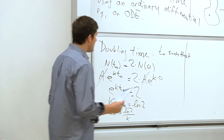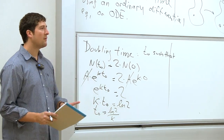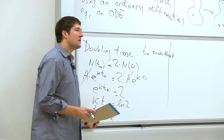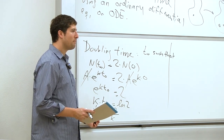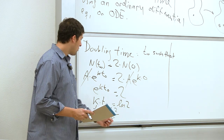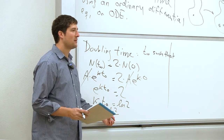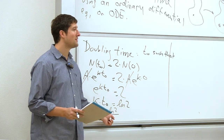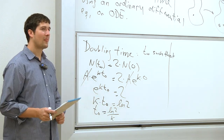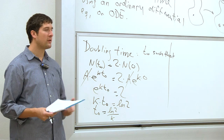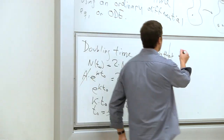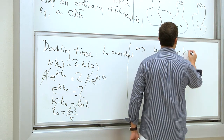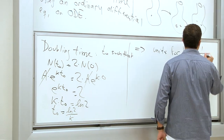Back to modeling. T0 has units of time — minutes, hours, whatever. So what are the units for k? It's 1 over seconds, or 1 over minutes. The units for k are 1 over time.